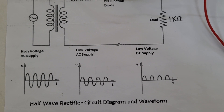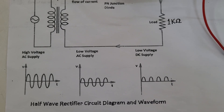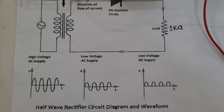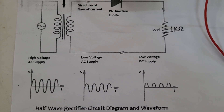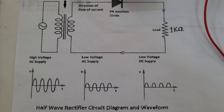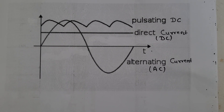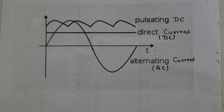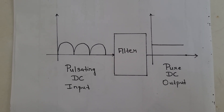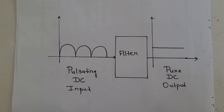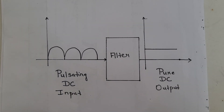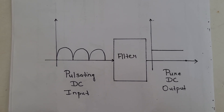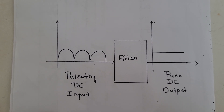The half wave rectifier converts the AC signal into DC, but the obtained direct current at the output is not a pure DC — it is a pulsating direct current. It is not constant and fluctuates with respect to time. From the graph, you can observe that pure DC has a constant magnitude whereas pulsating DC has a variable magnitude. Therefore, we need a direct current that does not fluctuate with respect to time. The only solution for this is using a smoothing filter.